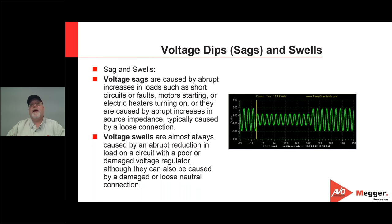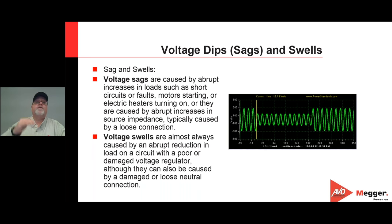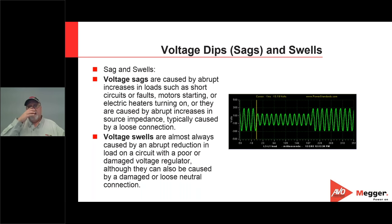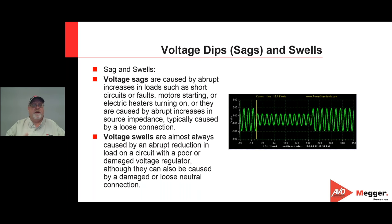Voltage swells are most commonly caused by large loads turning off. If you have a large motor with a lot of energy tied up in the magnetic field and you turn it off, that energy has to come down, and we're going to see a swell as the voltage rises. This can cause a breaker to trip. On a delta system, a phase-to-phase fault can cause the other phase to go high, producing an overvoltage or swell depending on how fast relay protection kicks in.